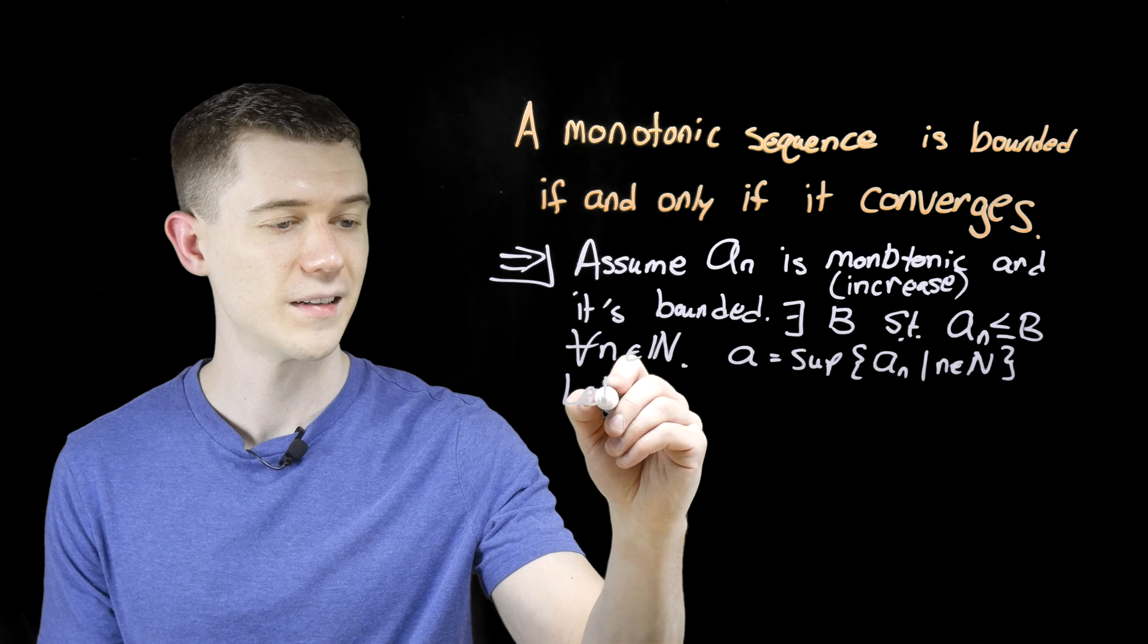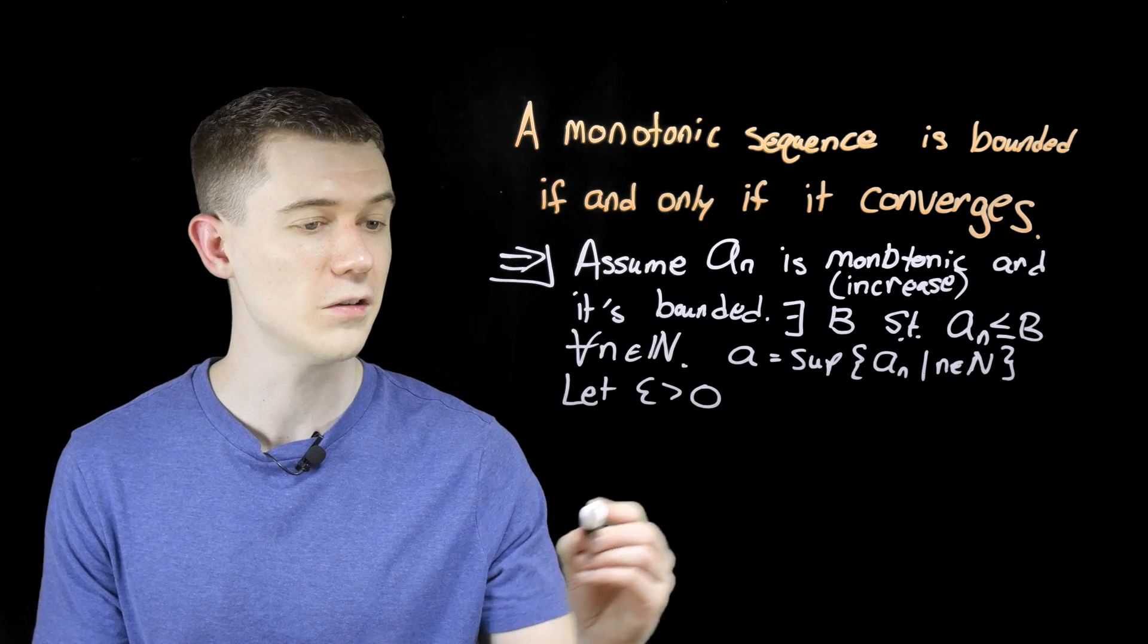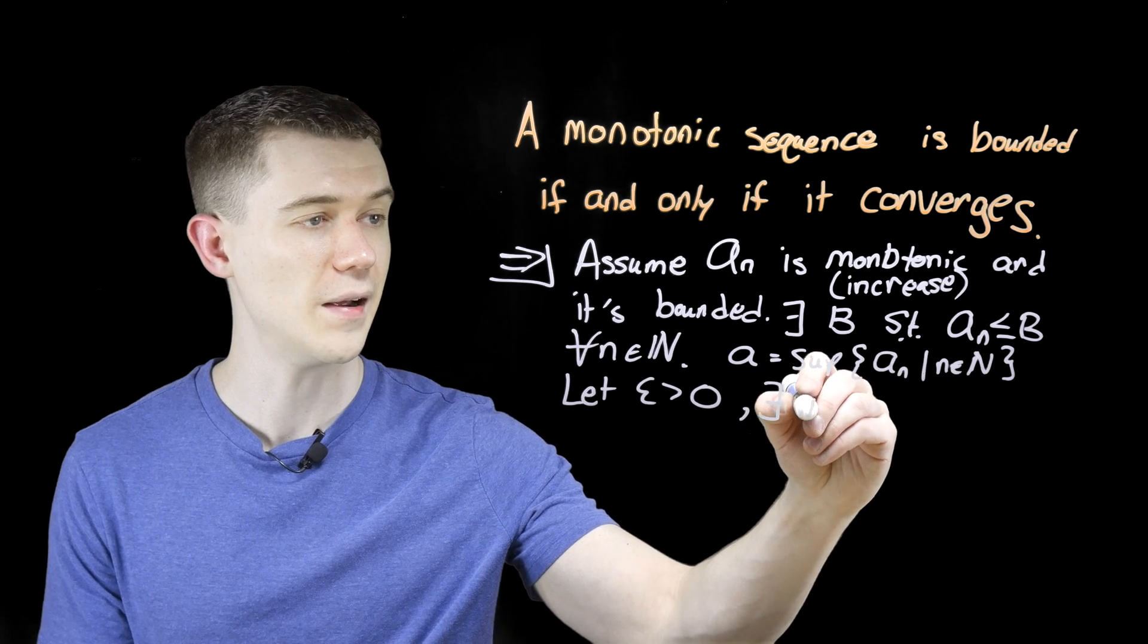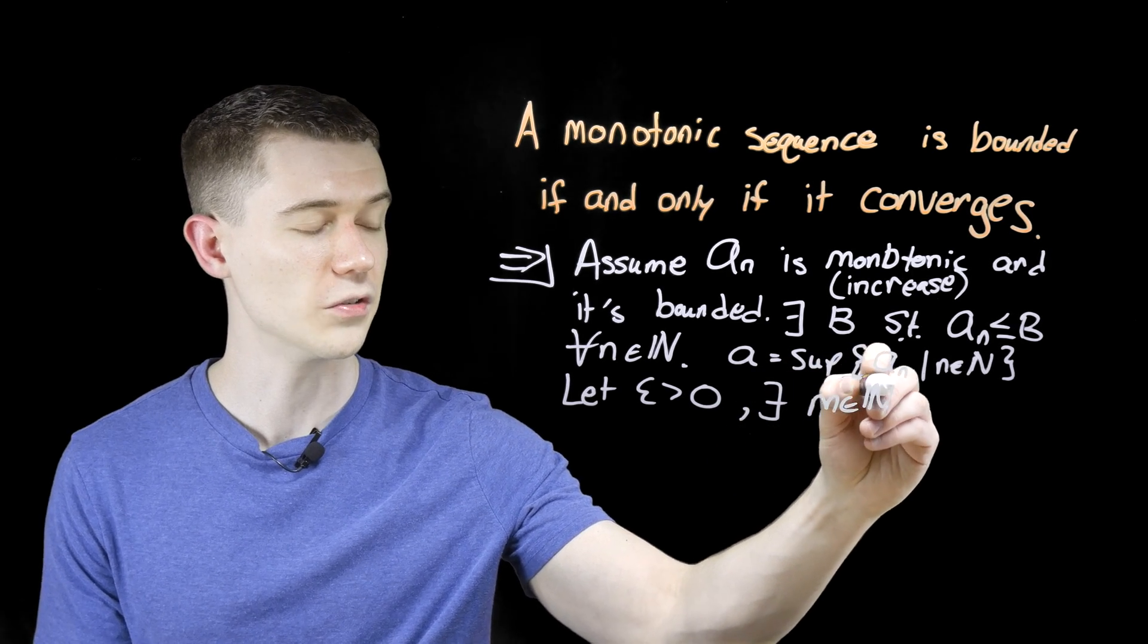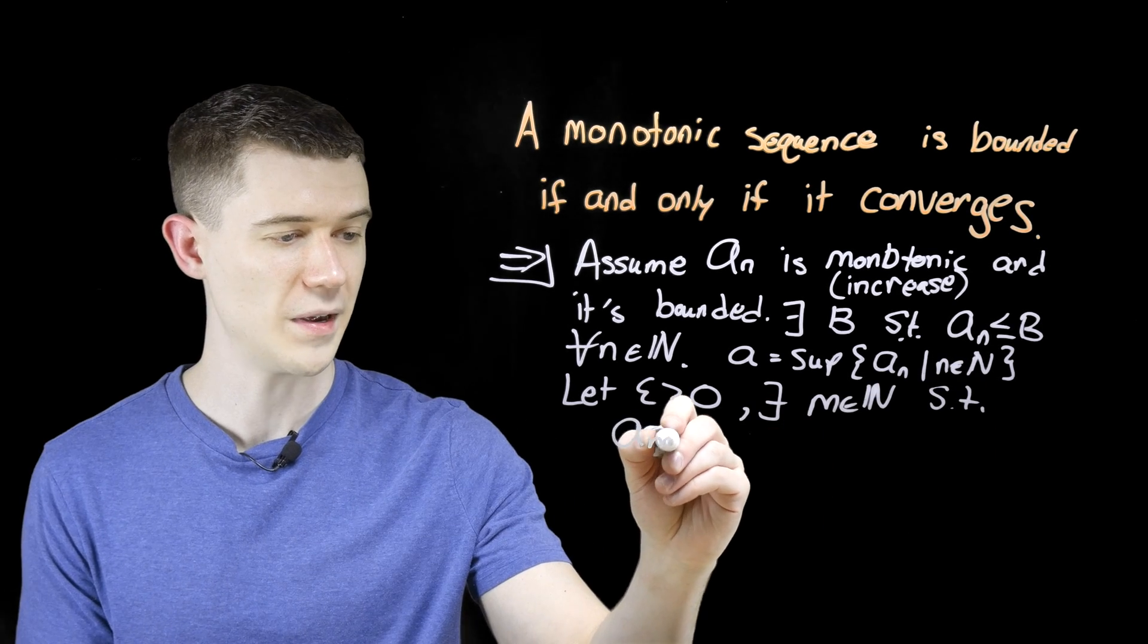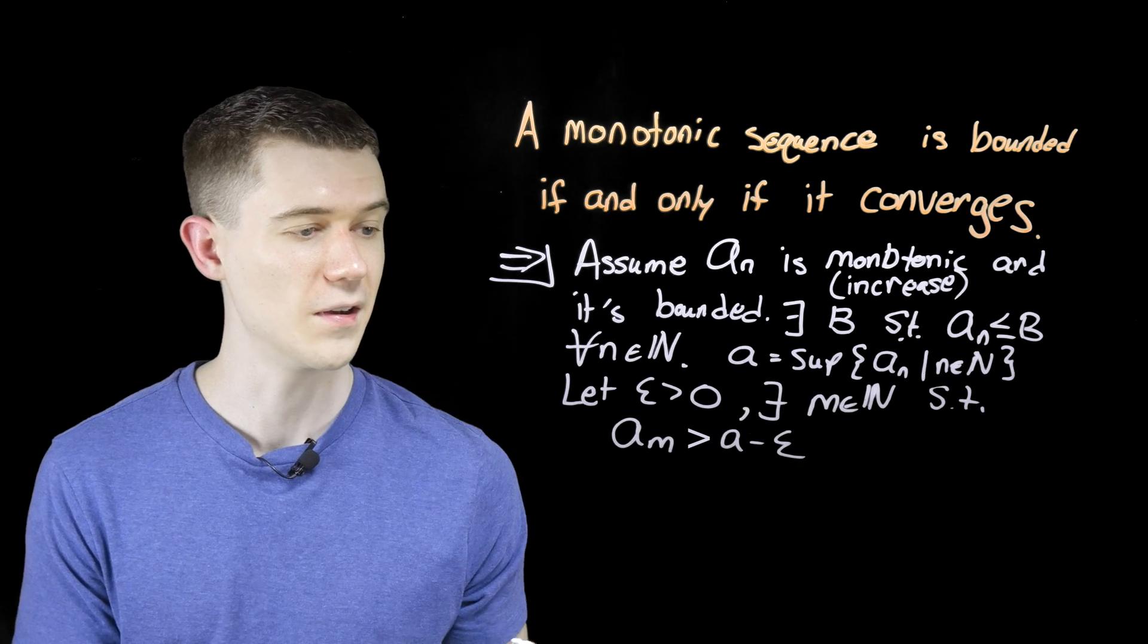after I let some epsilon, some arbitrary epsilon be greater than zero, there must exist some m in the natural numbers such that a sub m is greater than a minus epsilon, right?